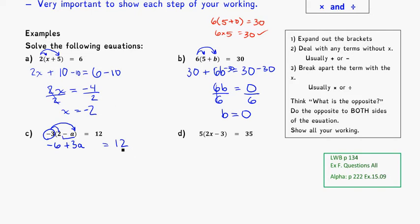Minus 6 plus 3a is equal to 12. So I want to think about dealing with the term again without the x. And in that case, that's the minus 6. And what's the opposite of taking away 6 or minus 6? That would be plus 6. So I'm going to plus 6 to both sides of the equation. So I get 3a because minus 6 plus 6 is 0. And then 12 plus 6 gives me 18. My next step would be then 3 times a. And the opposite of 3 times by something is to divide by 3. So I'm going to divide both sides by 3. And I get a is equal to 6.